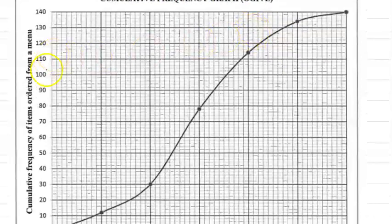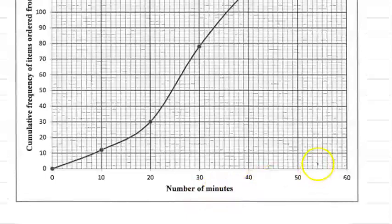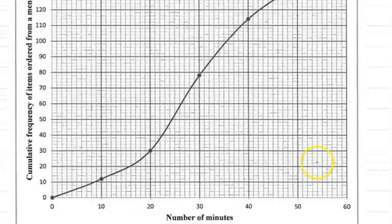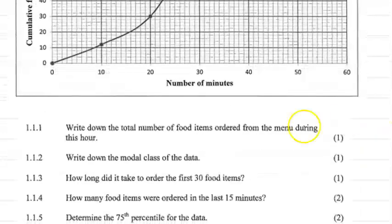The cumulative frequency is on the y-axis and the number of minutes is on the x-axis as our independent variable. As you can see, the ogive or cumulative frequency curve looks like an S-shaped curve.